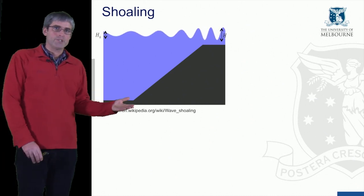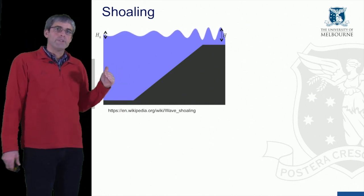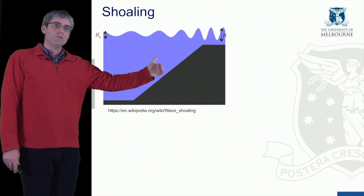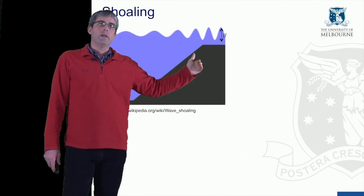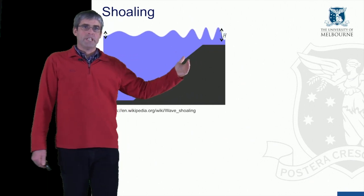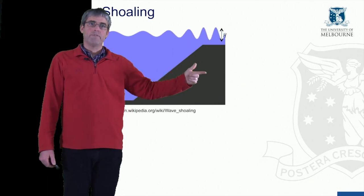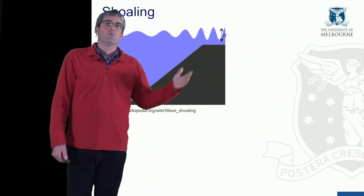To look more closely at shoaling, you can see the wave, the swell, coming in to the shallower water. As it approaches shallower water, the wave slows down because there's an interaction between the wave and the bed of the water. The wave slows down.